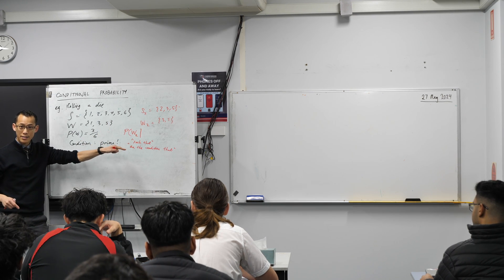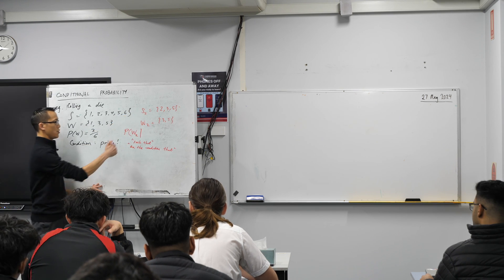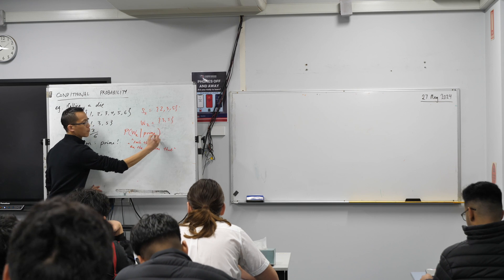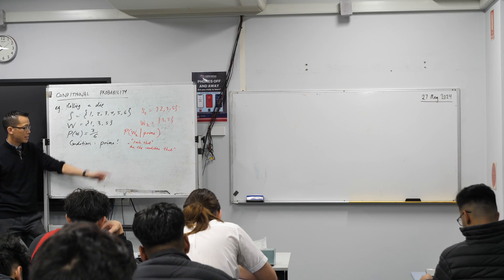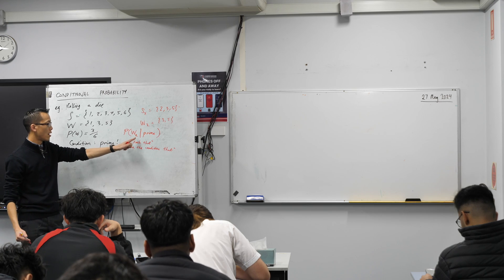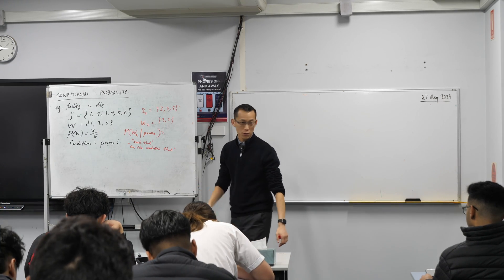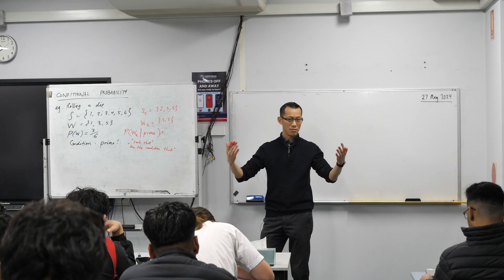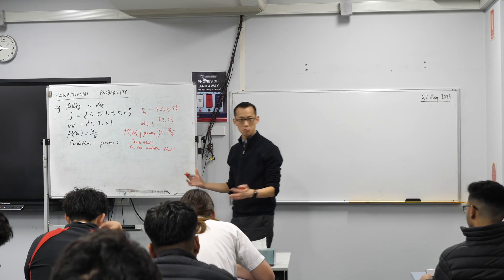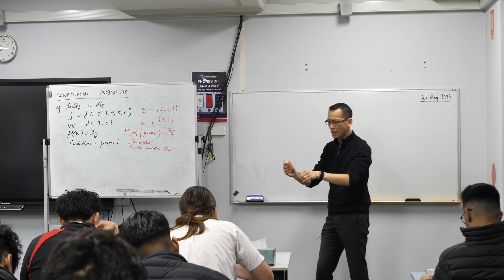So you could say 'prime' after the bar, or write S2 if you wanted — this is the probability of winning such that, or on the condition that, it's prime. Like we mentioned, it's just favorable events over total sample space. Done.